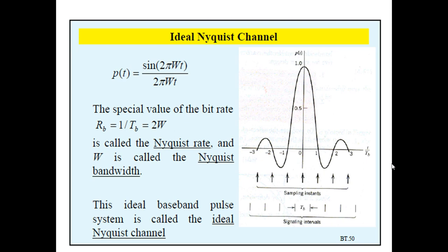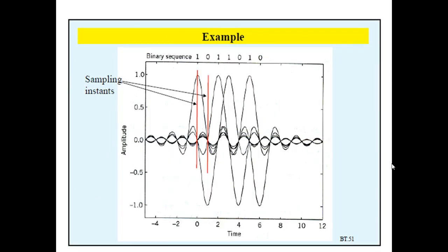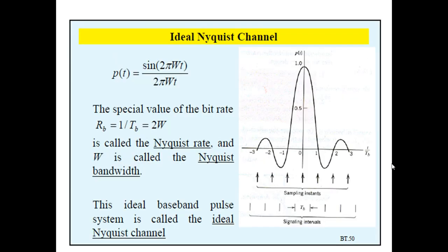If the received waveform YT is sampled at time instants t = 0, ±TB, ±2TB, and so on, then the pulse defined by μ·PT minus i·TB with arbitrary amplitude μ and index i = 0, ±1, ±2, and so on will not interfere with each other. So if we take one signal at a sampling instant and another pulse at another sampling instant, there is no inter-symbol interference due to the use of this sinc pulse as a Nyquist channel.